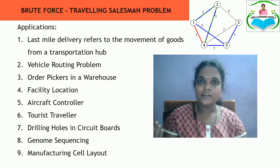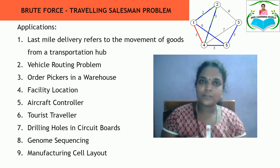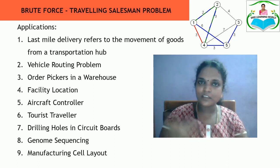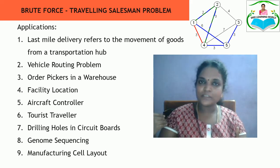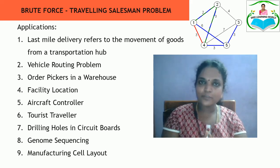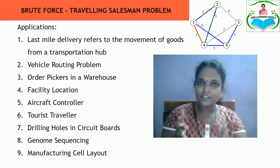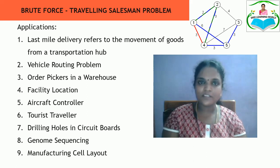For facility location: if you want to build a warehouse to run your business, and your business has multiple locations, the warehouse must be placed at a position where the distance from each business location to the warehouse is minimized. This is the facility location problem, and it can also be solved using the Travelling Salesman Problem.